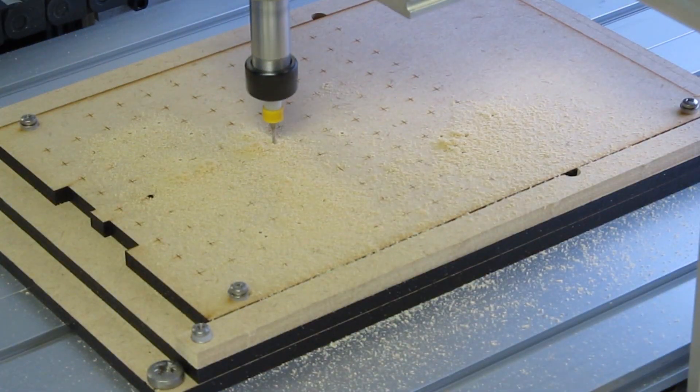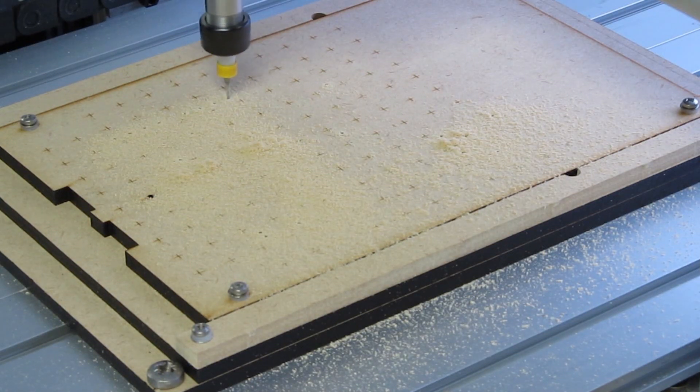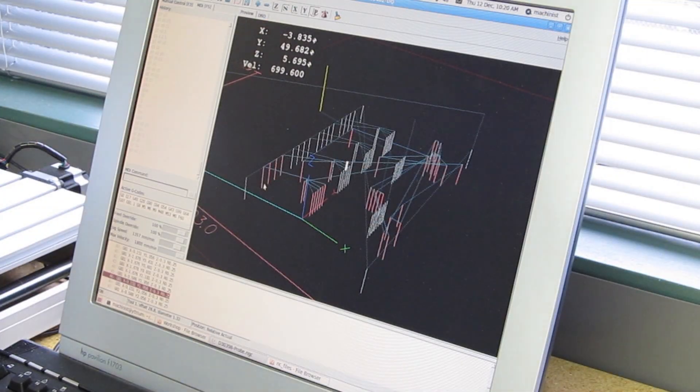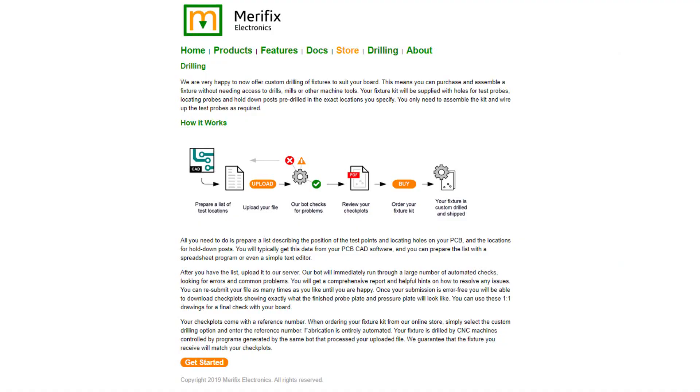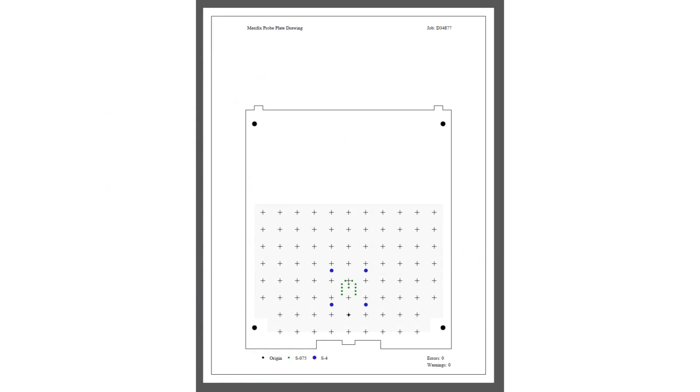We also offer a drilling service to machine all the holes for probes to suit the board you need to test. Your kit is supplied with the holes pre-drilled, so you only need to assemble and wire it up. The drilling service is fully automated, easy to use via our website, and very inexpensive.